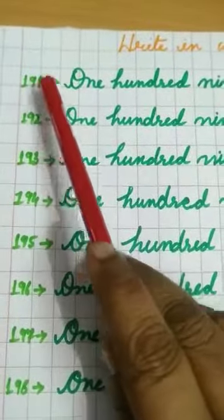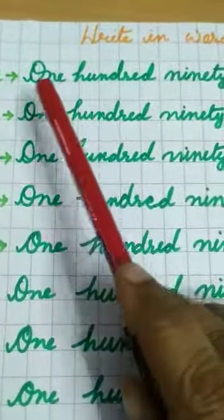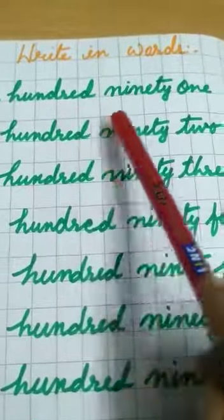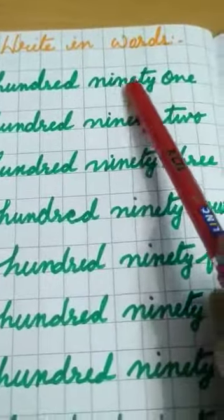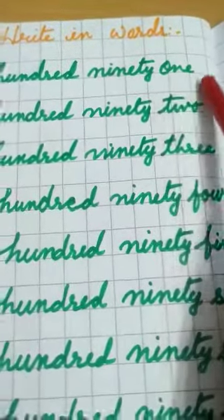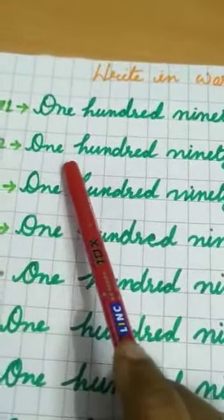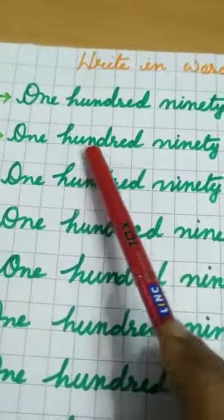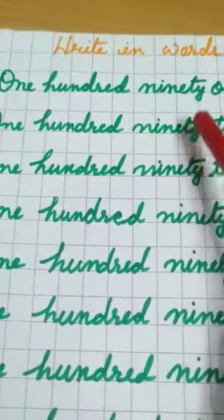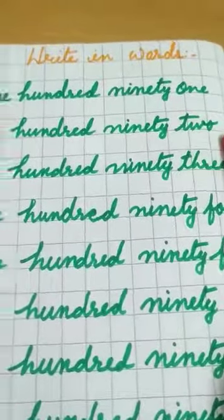191 — in words: O N E H U N D R E D N I N E T Y O N E. 192 — O N E H U N D R E D N I N E T Y T W O.